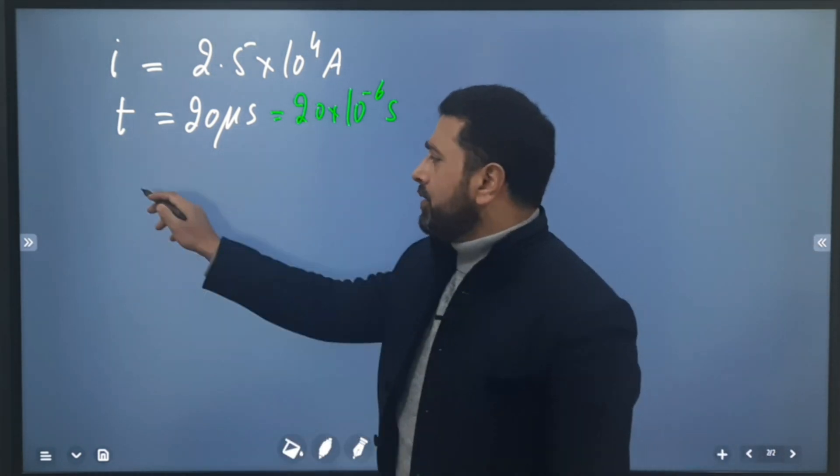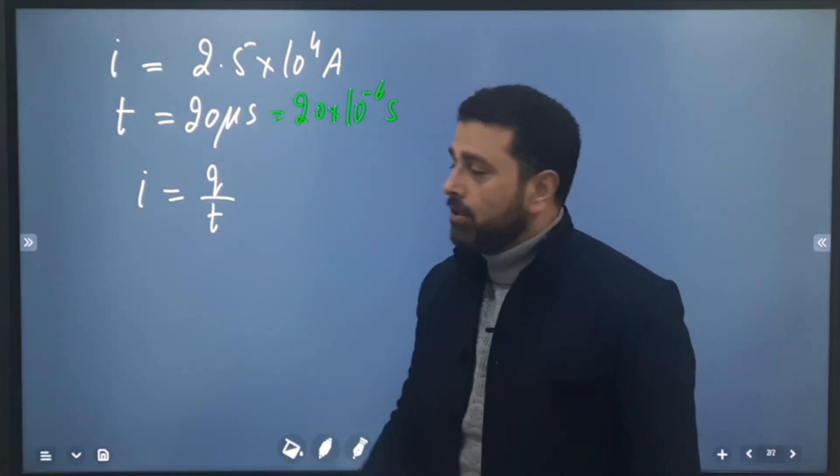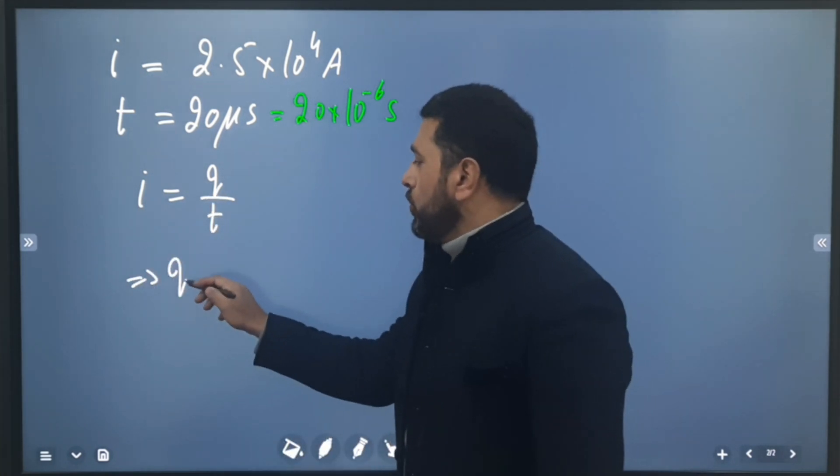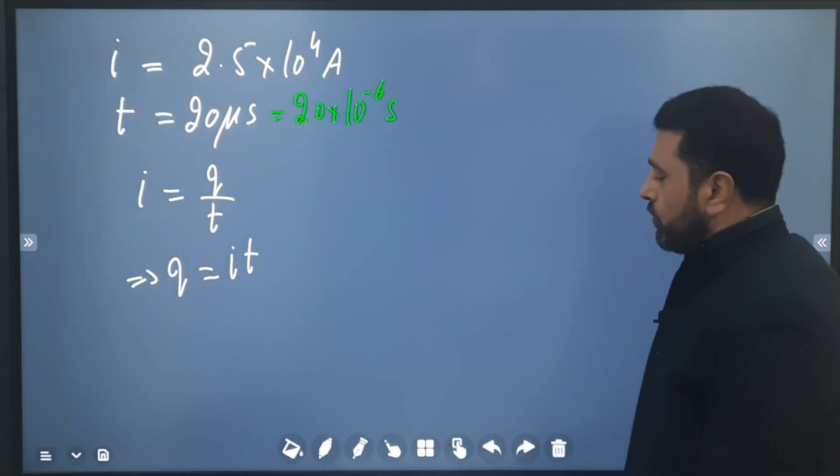So we just use the definition of current. Current equals charge flowing divided by time taken. Which means Q equals I into T.